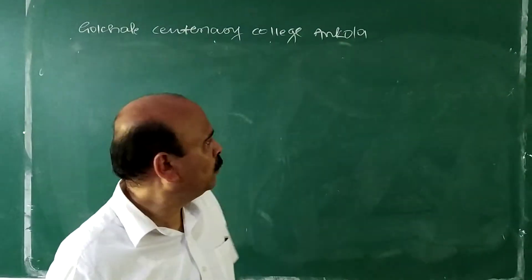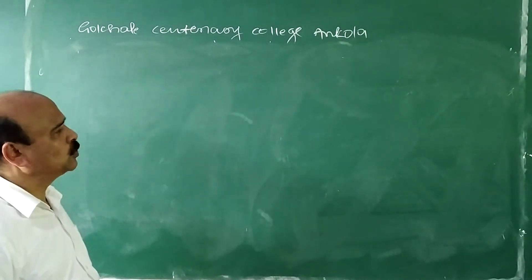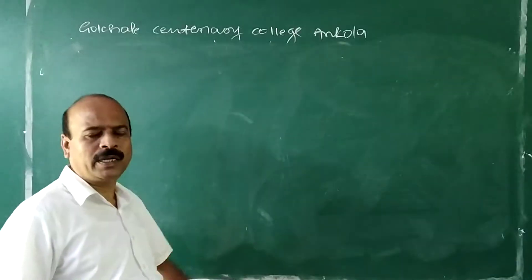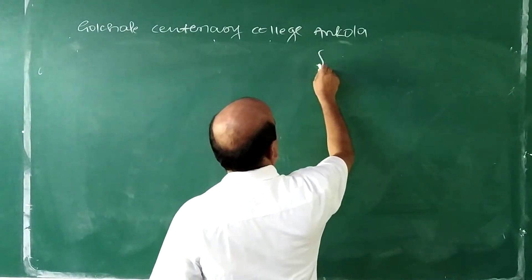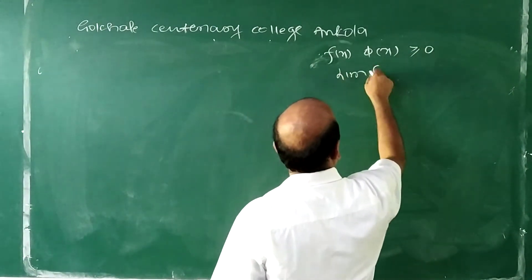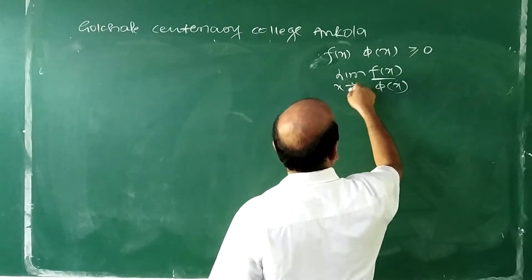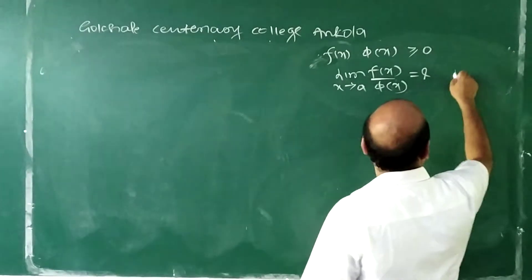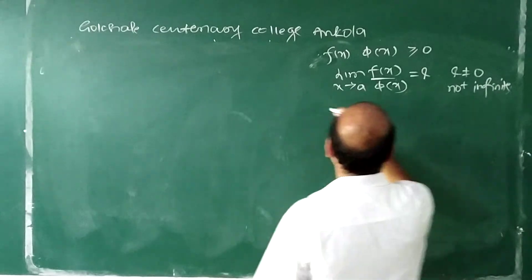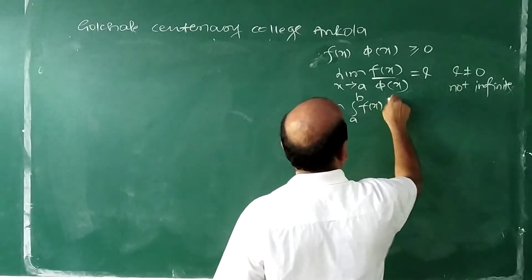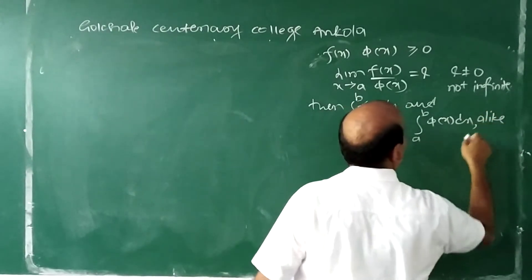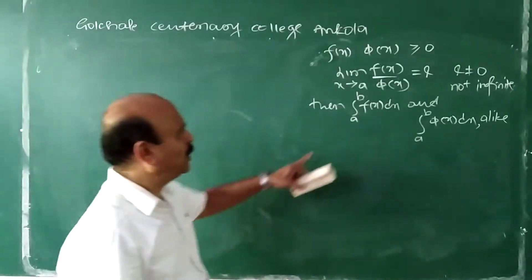Dear students, in this video I explain two useful integrals for comparison and solve some problems using the comparison test. What does the comparison test say? If f(x) and φ(x) are both positive and the limit of f(x)/φ(x) as x tends to A is L, which is not equal to 0 and not infinite, then the integrals ∫A to B f(x) dx and ∫A to B φ(x) dx are alike — either both converge or both do not converge.